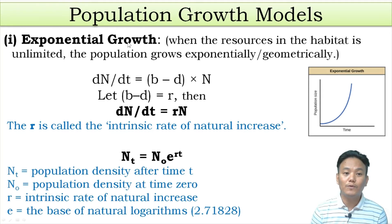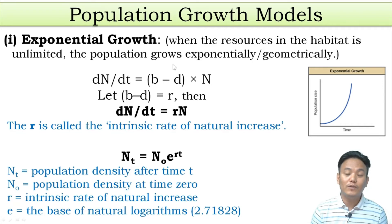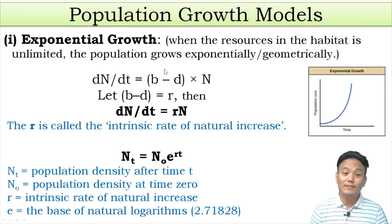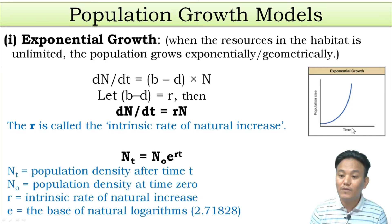In the exponential growth model, we assume that the resources in a habitat are unlimited for an organism. In such a case, the organisms will reproduce at maximum capacity and the population will grow exponentially. The population size will keep on increasing in a very short amount of time, and this is represented by a J-shaped curve on the graph.